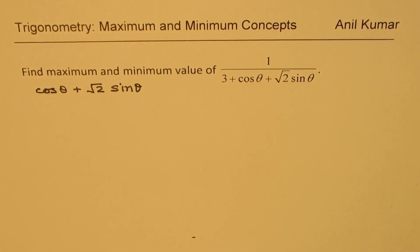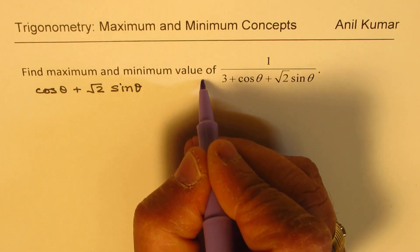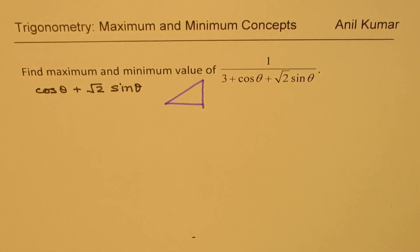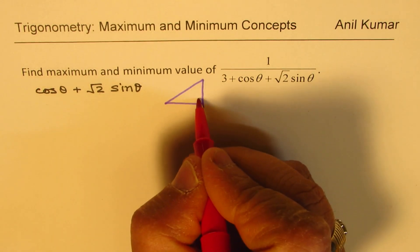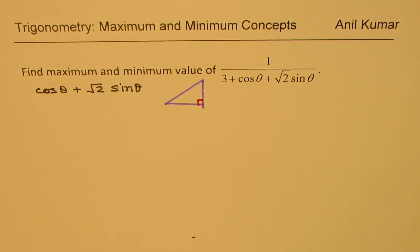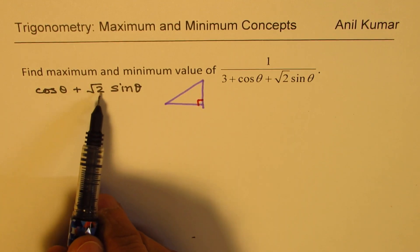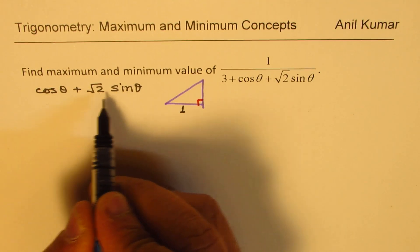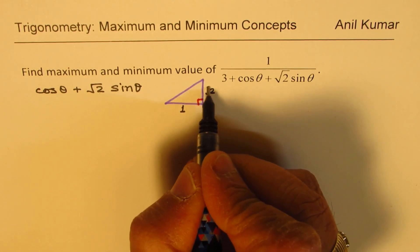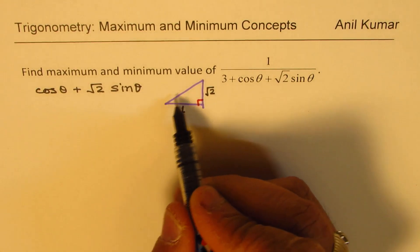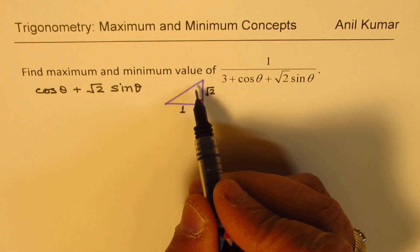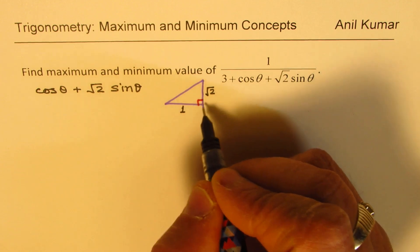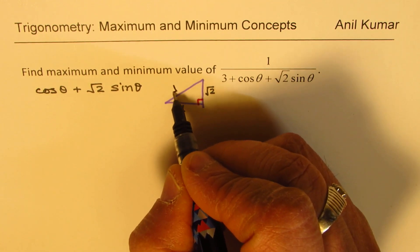Think about a triangle to understand the concept and how we get our result. We are given cos θ + √2 sin θ. The coefficient of cos is 1 and the coefficient of sine is √2. For a right angle triangle, the hypotenuse would be √(1² + (√2)²) = √(1 + 2) = √3.